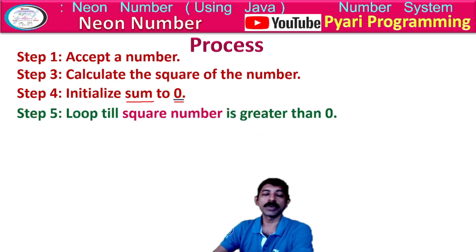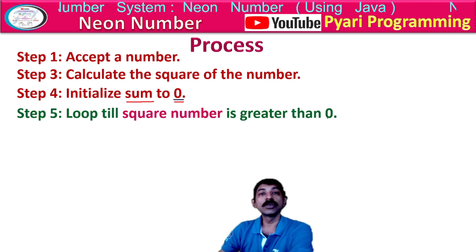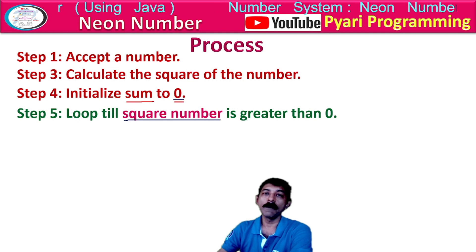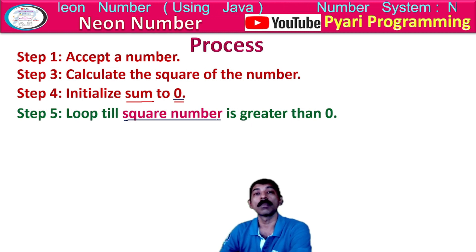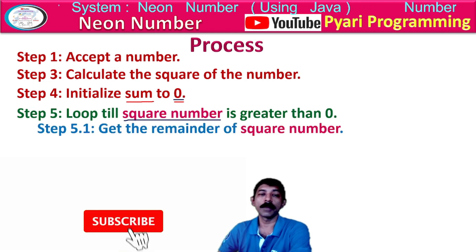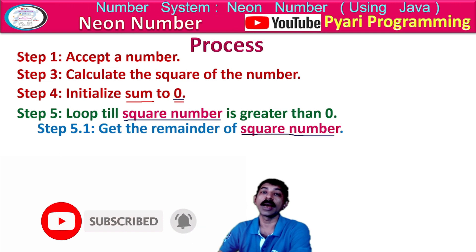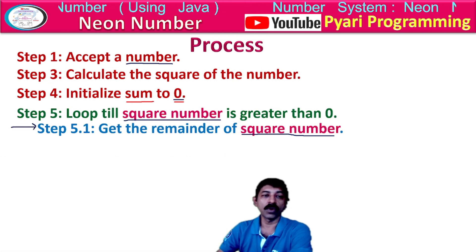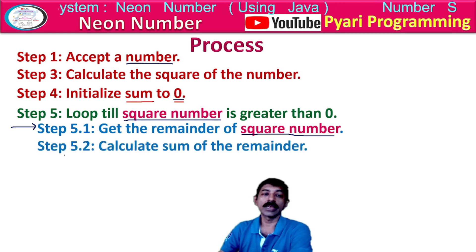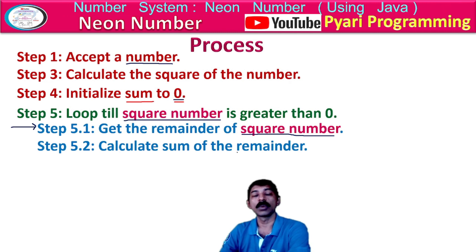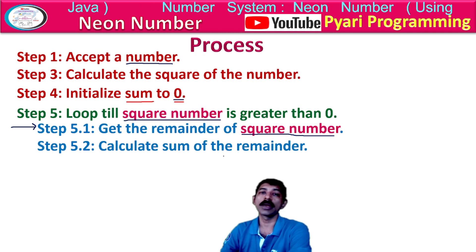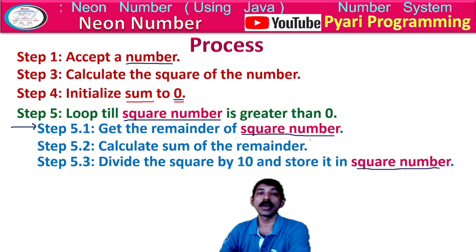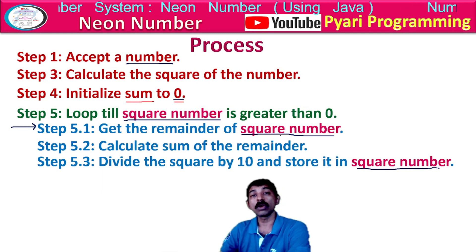The next step says: loop till the square number is greater than zero. If I need the sum of digits of the square number, I must use 'sq > 0' — not 'no > 0', which would be wrong. I have indented the next steps because they must be written inside the loop: get the remainder of the square number (sq % 10), calculate the sum of the remainder (sum + remainder), then divide the square by 10 and store it back in the square number to reduce it.